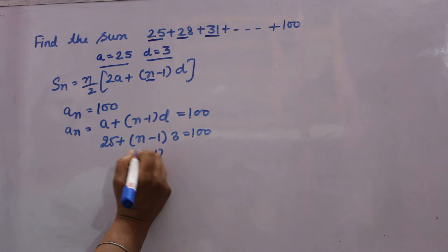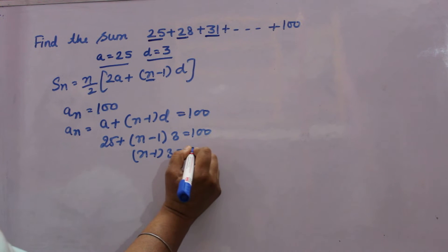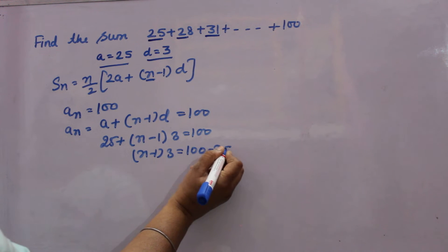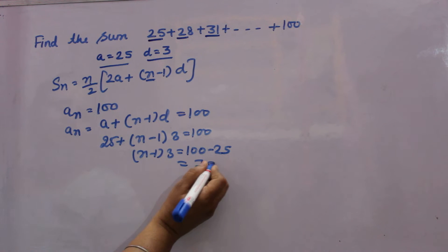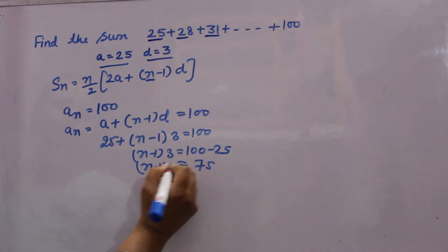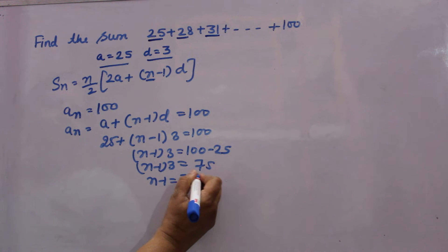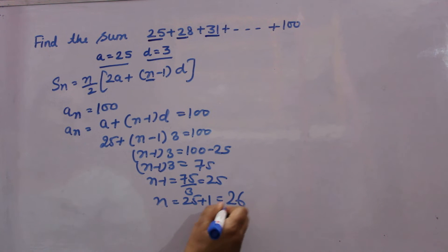N minus 1 into 3 equals 100 minus 25, that is 75. So N minus 1 into 3 equals 75. N minus 1 will come 75 over 3, that is 25. N will come 25 plus 1, that is 26.